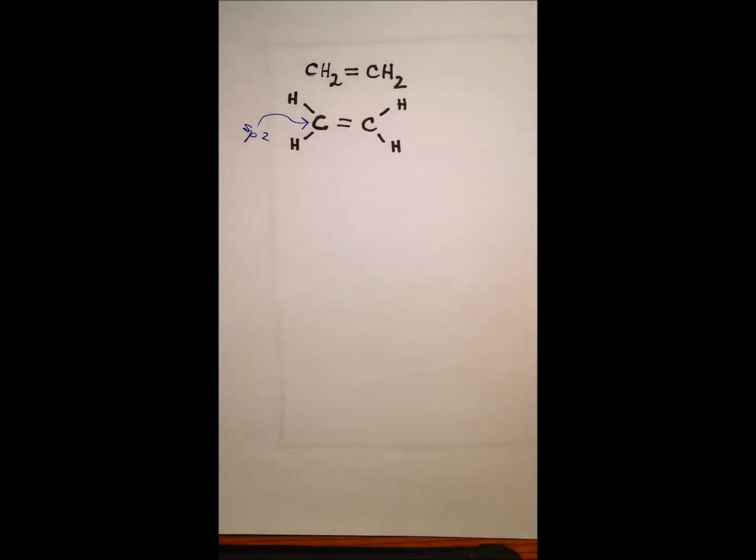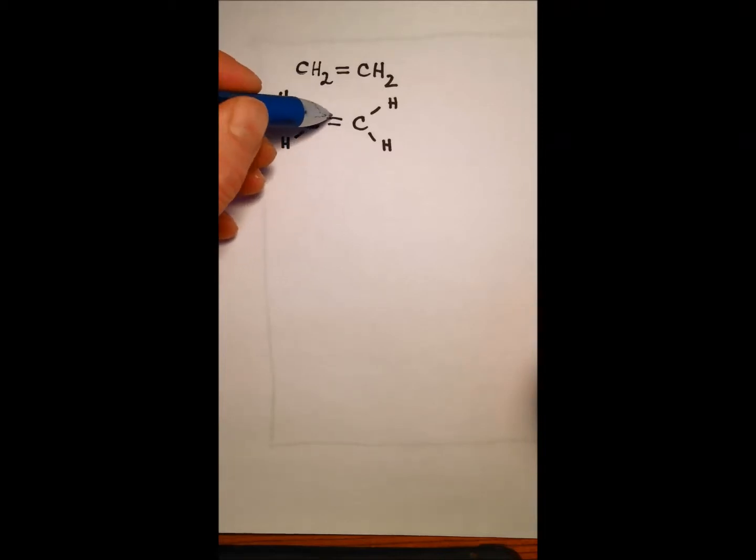Hybridized. You can't see that, there we go. Each one is sp2 hybridized, this one and this one, and so that means that each carbon has an sp2 hybrid orbital pointing in this direction, this direction, and this direction, giving me that trigonal planar 120 degree bond angle geometry. So I don't want to complicate this drawing by adding all of that in, I'm just reminding you of that.